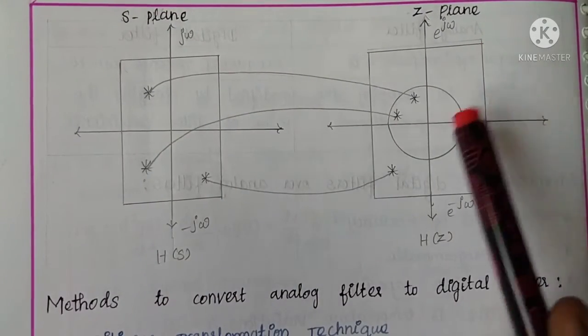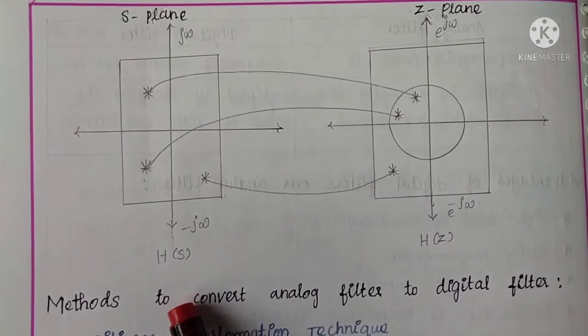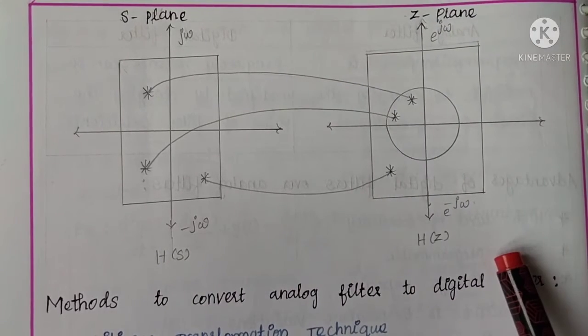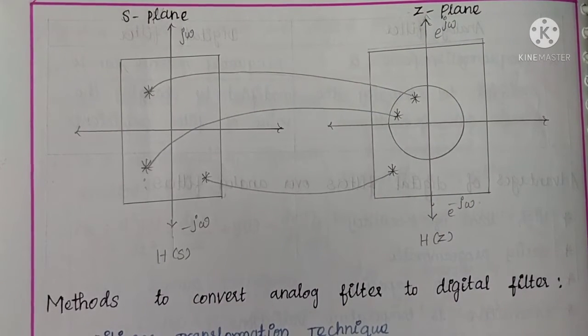This is the Z-plane. The Z-plane will have a unit circle. This is H(s) for the analog filter and H(z) for the digital filter.